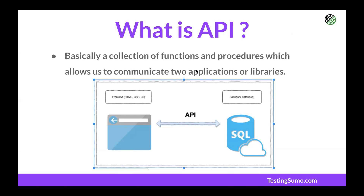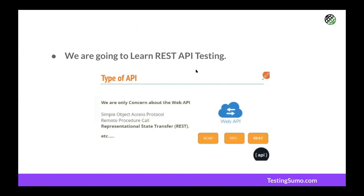Most companies are using REST, with some moving toward GraphQL. An API is essentially a collection of functions and procedures that allow two applications to communicate. We're focusing on REST APIs because most companies use them. REST APIs work by having a client make HTTP requests and a server return HTTP responses.